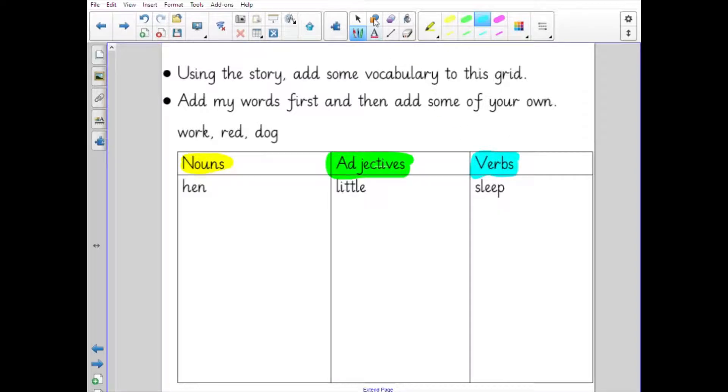So already in there we've got hen, little, and sleep. Let's have a look at the words in my list. Nouns, remember, are people, places, things. Adjectives describe things like nouns, and verbs are our doing or our action words.